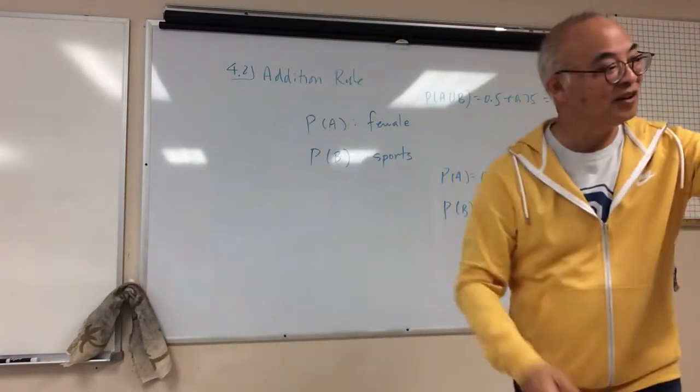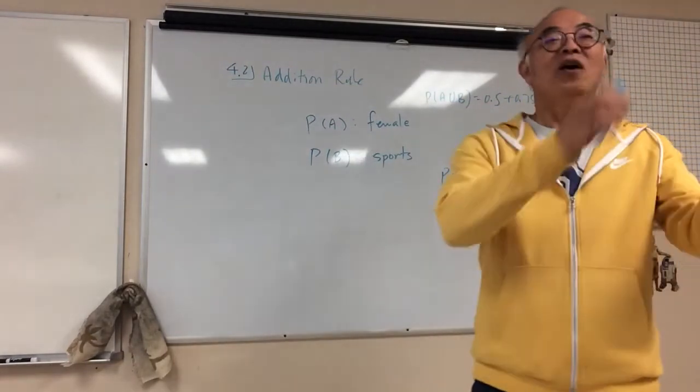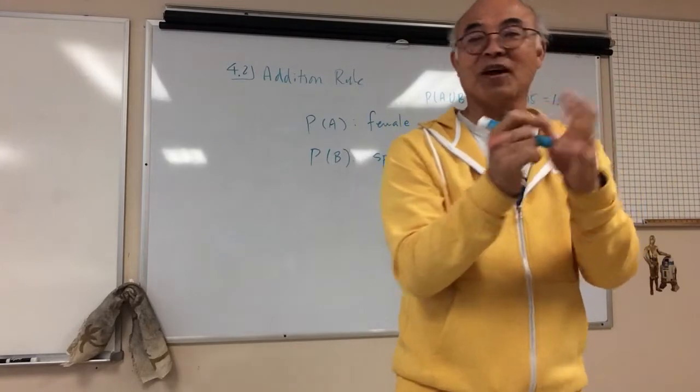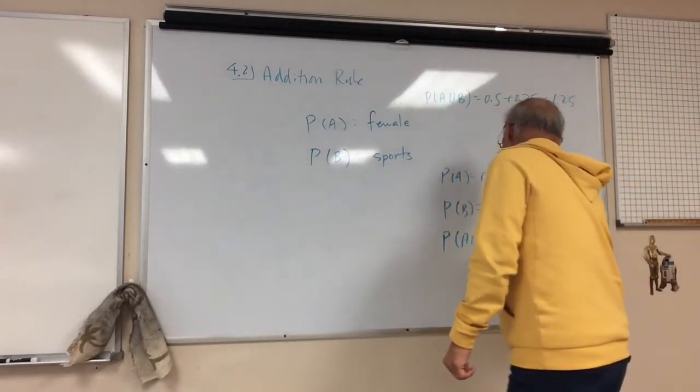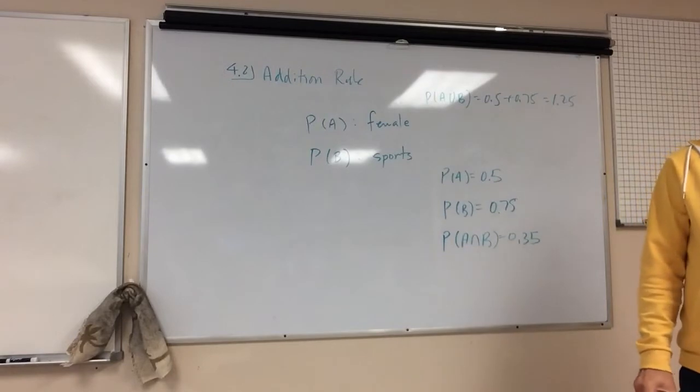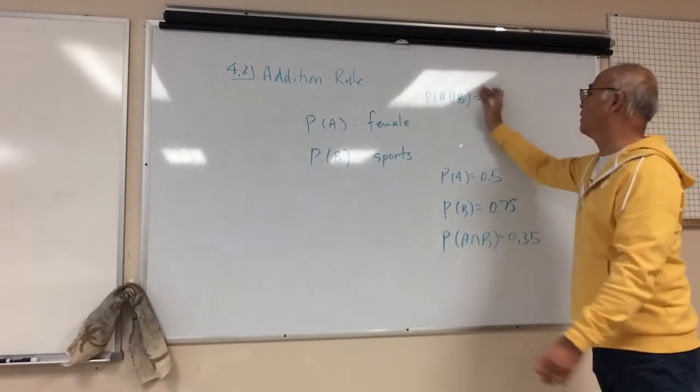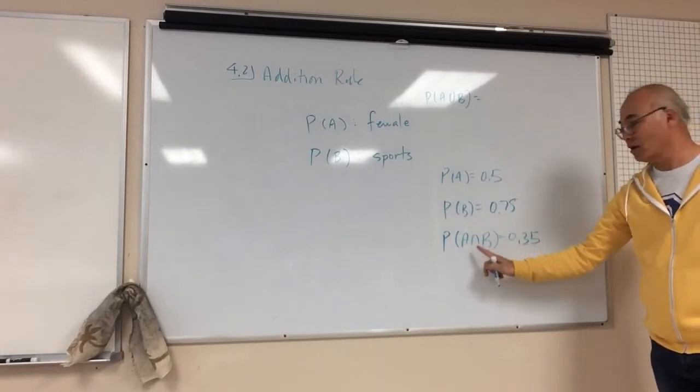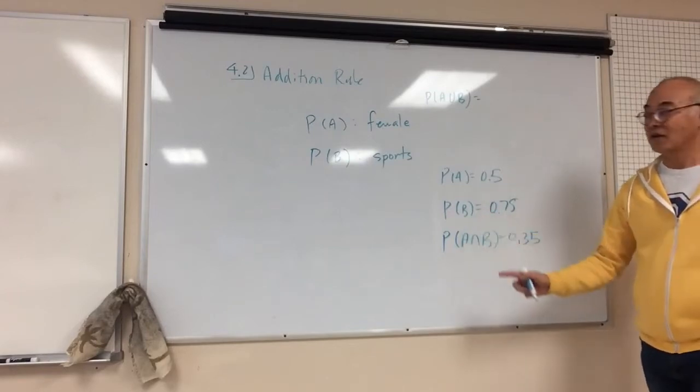It's because there's people playing both. Because there are people who are actually female and play the sports. They're in both, right? So I'm going to give you that. Let's say the probability of being both is 0.35. So this is what I'm trying to find. And this is what you've learned.